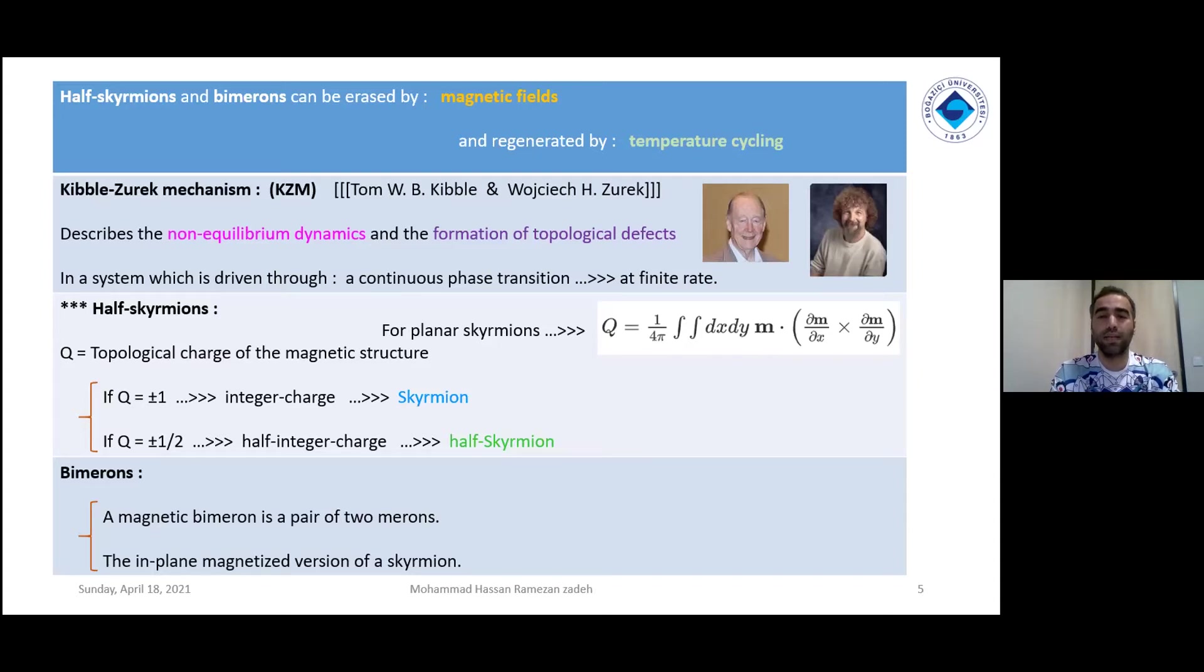In a system which is driven through a continuous phase transition at a finite rate. About half-skyrmions, we have a formula for planar skyrmions. Q is topological charge of the magnetic structure. If Q is an integer, we call it a skyrmion. If it is a half-integer, we call it half-skyrmion.